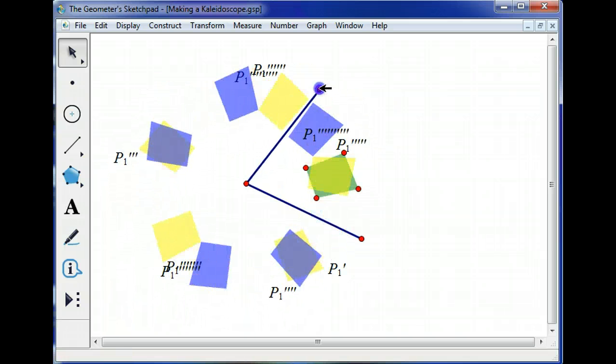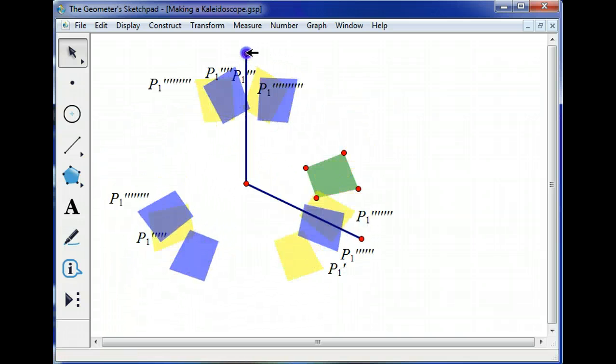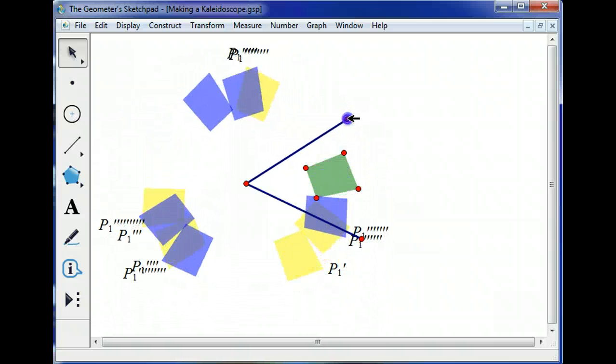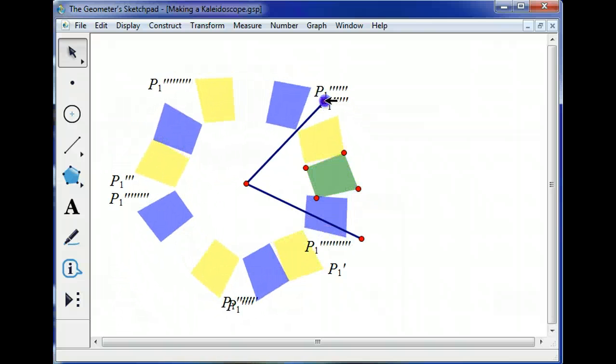Now, watch what happens as I rotate this segment. You can see all those reflections start to rotate around, so hopefully you're getting a sense of how this kaleidoscope is going to work.